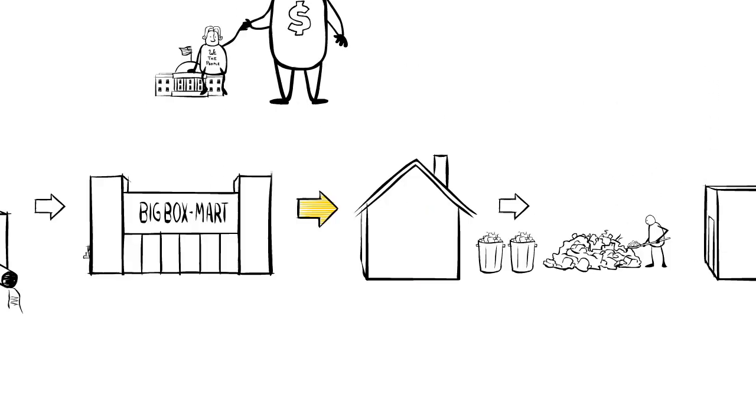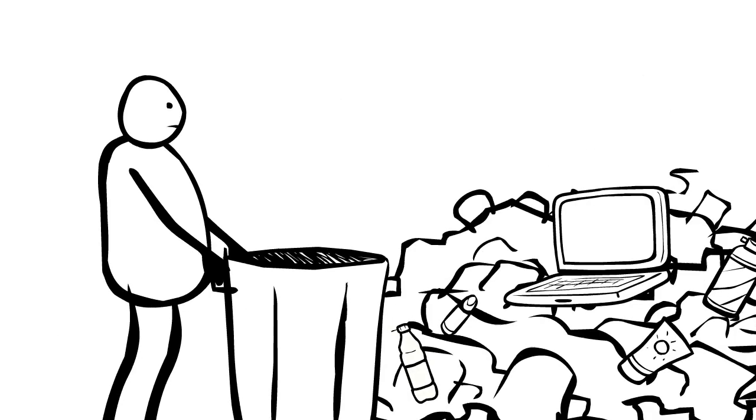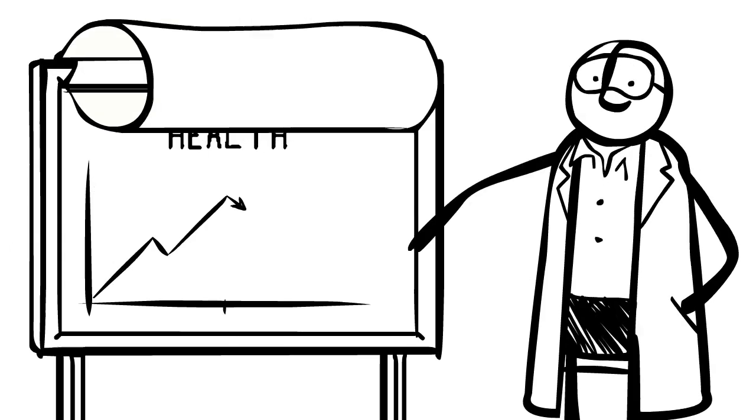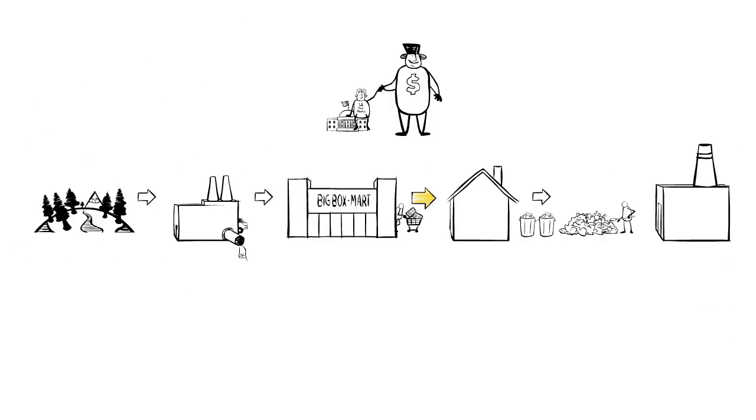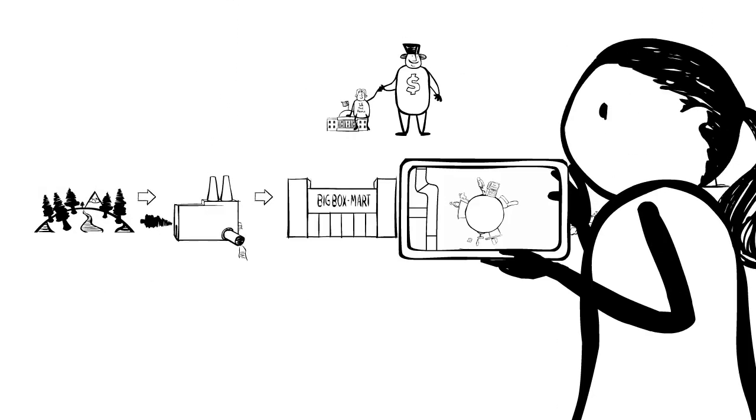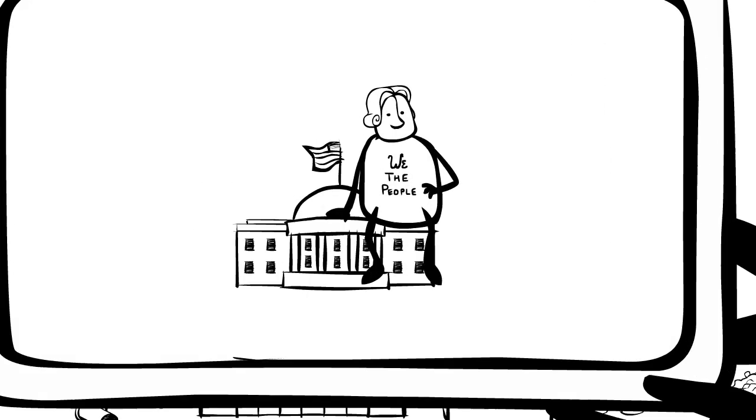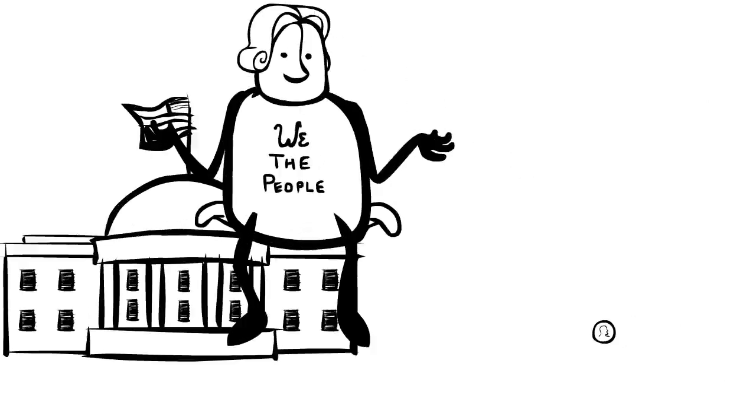In Season 1 of The Story of Stuff, we looked at a system that creates way too much stuff and way too little of what we really want. Now we're going to start looking at the stories behind The Story of Stuff. That's where we'll find ways to turn this situation around. Welcome to Season 2.